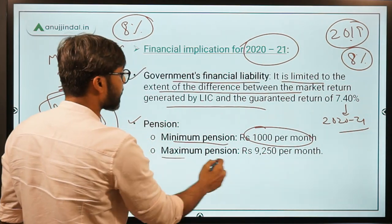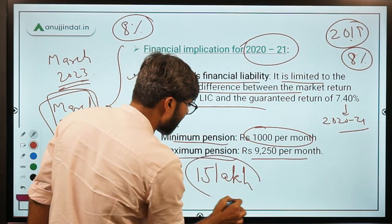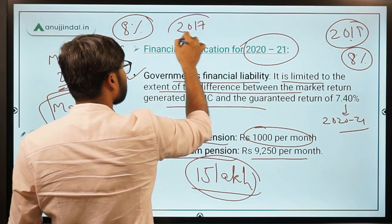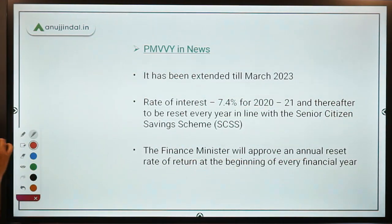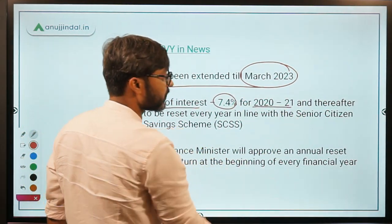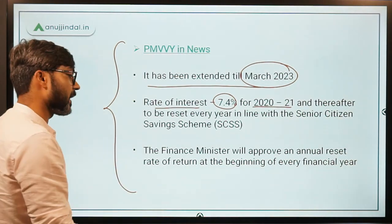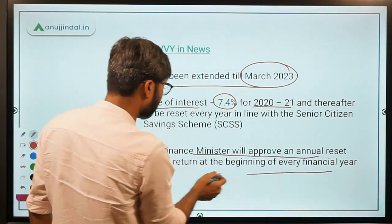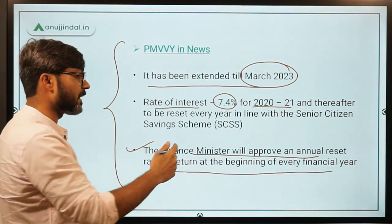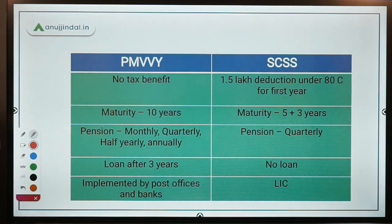The minimum pension under the scheme is rupees 1000 per month, while the maximum pension is rupees 9250 per month. The maximum investment allowed is rupees 15 lakh. The scheme was launched in 2017 and has been extended till March 2023. After this financial year, the rate of interest will be announced by the Ministry of Finance before the beginning of every financial year, and it will be in line with the Senior Citizen Savings Scheme.